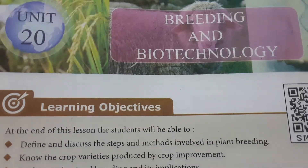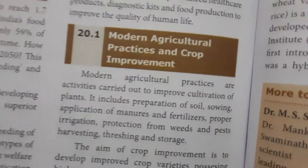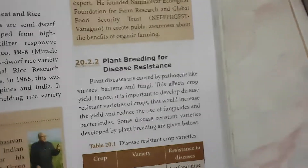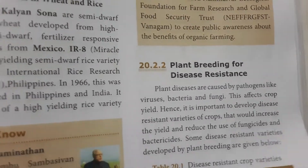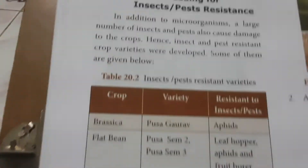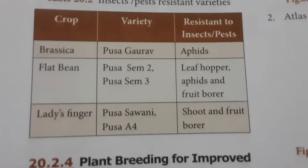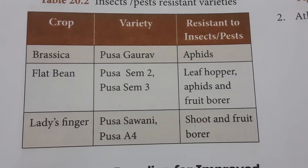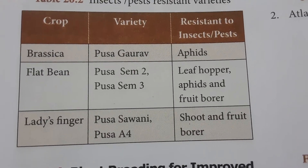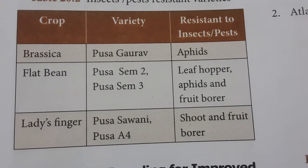Breeding is nothing but improving the quality of the next generation by using biotechnology techniques. In this lesson, they cover hybridization and how crops are improved. Plant breeding covers disease resistance, hybridization, and new characters. Breeding also helps crops resist pests and insects.